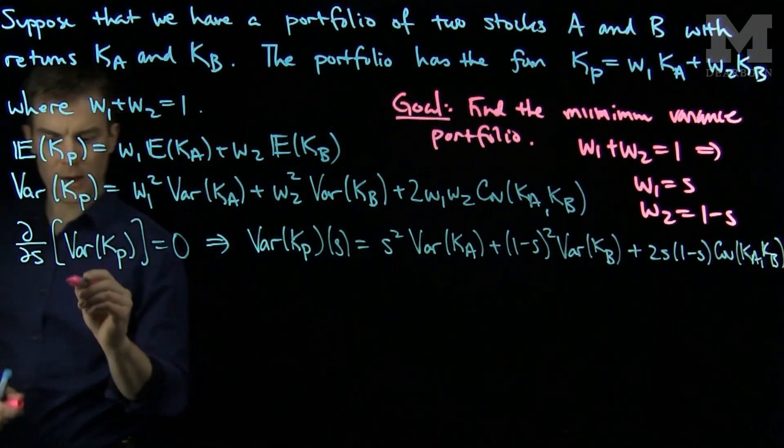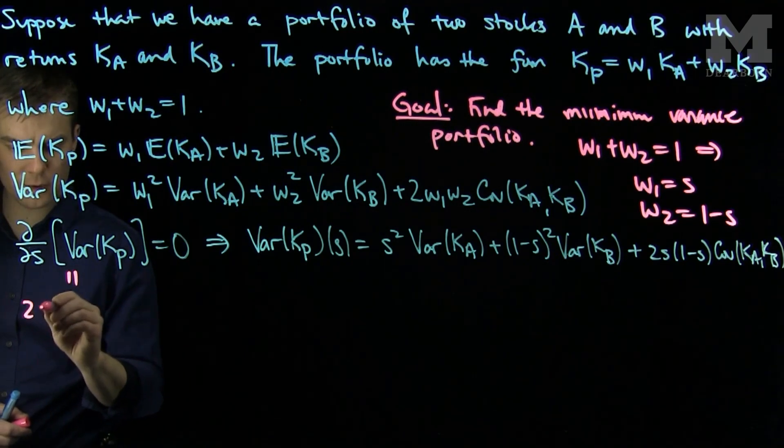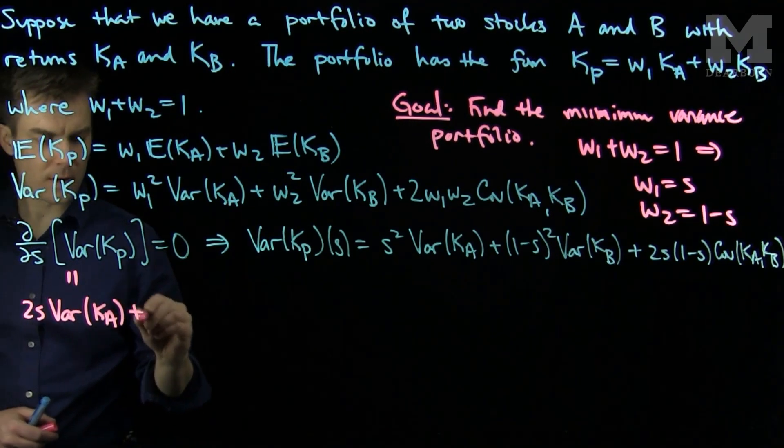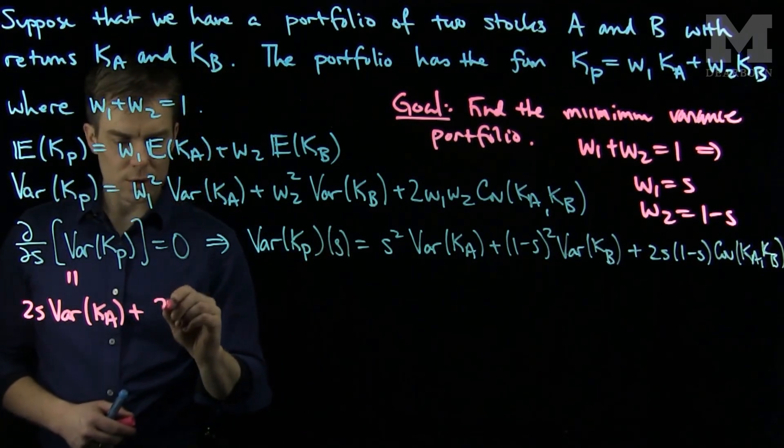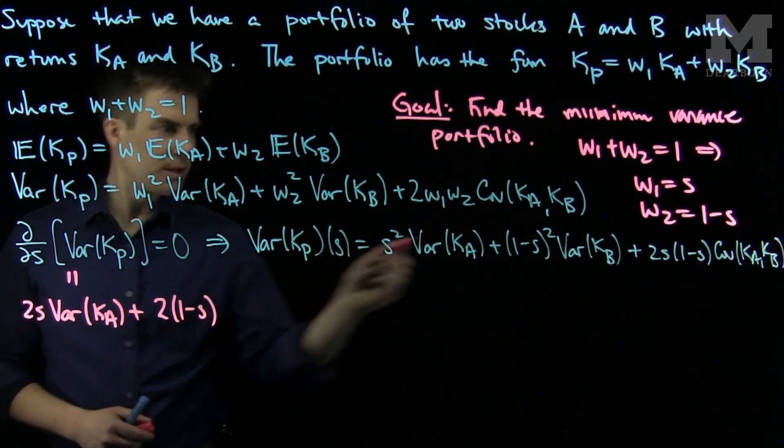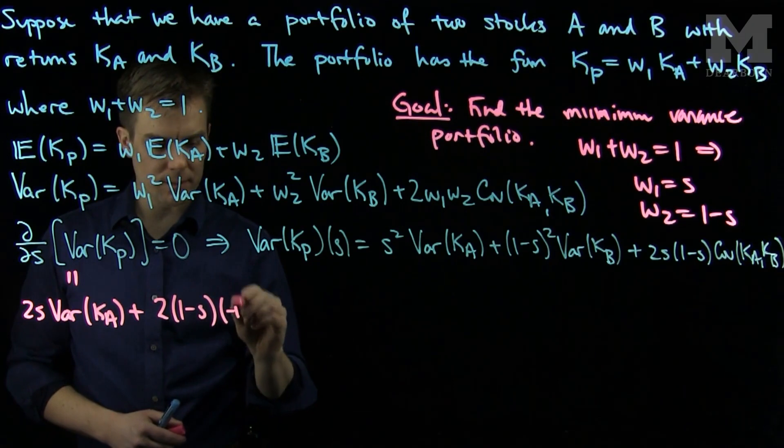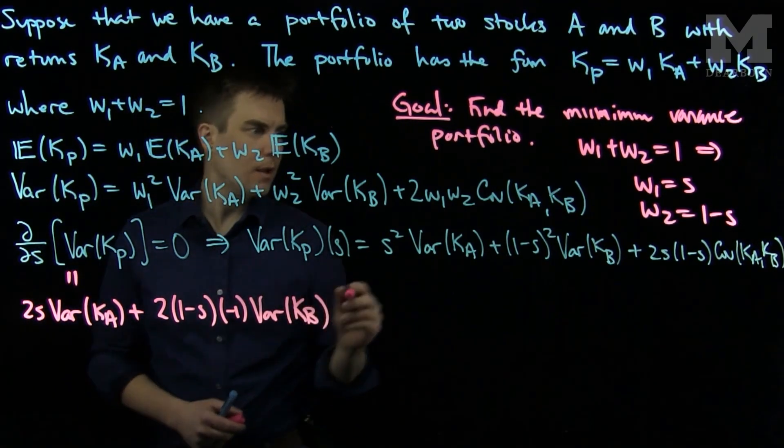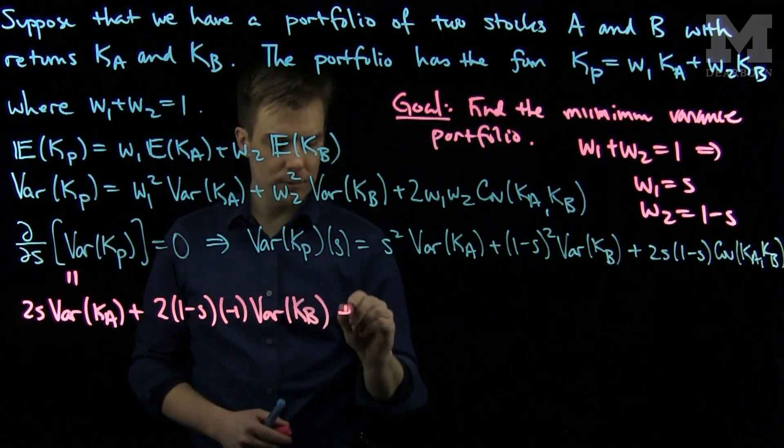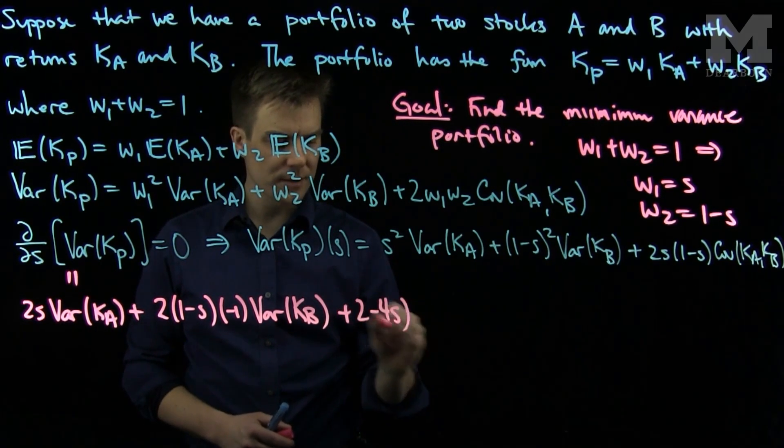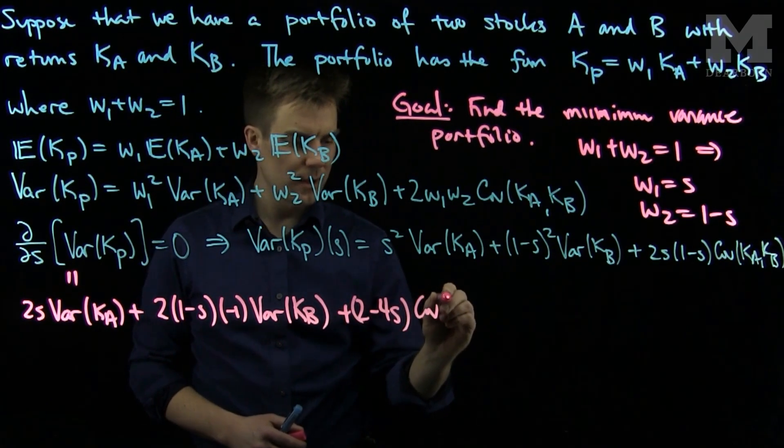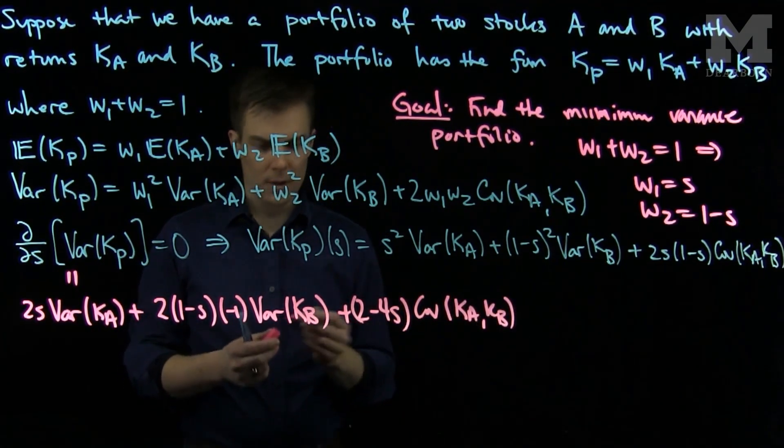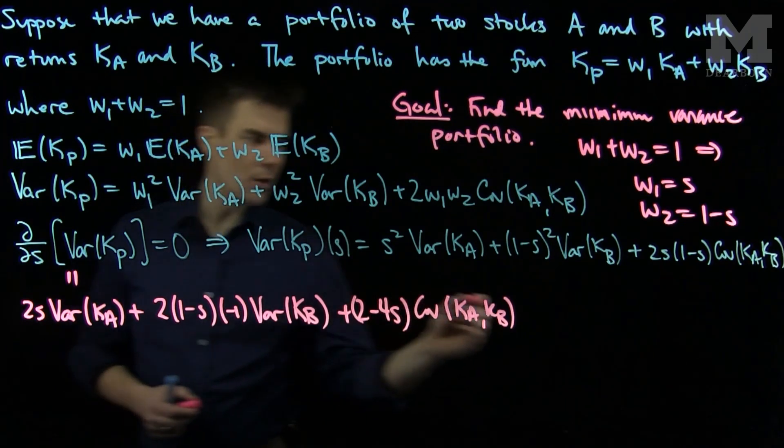So differentiating this with respect to S, we will see that this expression over here is 2S, the variance of Ka plus 2, 1 minus S times negative 1, the variance of Kb. And then I will have a 2 minus 4S, the covariance of Ka and Kb. And we will set this, of course, equal to 0.